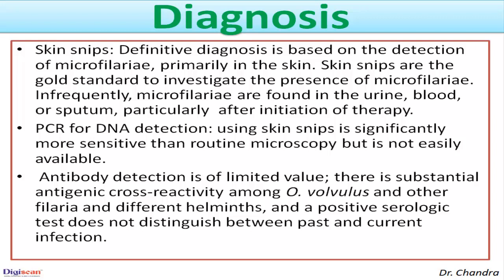Skin snips are the gold standard to investigate the presence of microfilariae. Infrequently, microfilariae are found in urine, blood, or sputum, particularly after initiation of therapy. PCR or polymerase chain reaction for detection of DNA using skin snips is significantly more sensitive than routine microscopy but is not easily available. Antibody detection is of limited value due to substantial antigenic cross-reactivity among Onchocerca volvulus and other filariae and helminths, and a positive serological test does not distinguish between past and current infection.